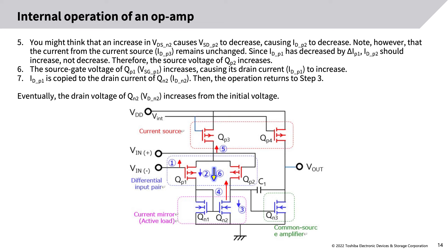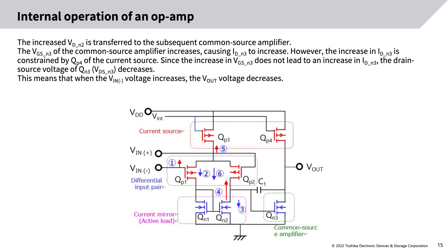8) The increased VDN2 is transferred to the subsequent common source amplifier. The VGSN3 of the common source amplifier increases, causing IDN3 to increase. However, the increase in IDN3 is constrained by QP4 of the current source. Since the increase in VGSN3 does not lead to an increase in IDN3, the drain-source voltage of QN3, VDSN3, decreases. This means that when the VIN- voltage increases, the Vout voltage decreases.